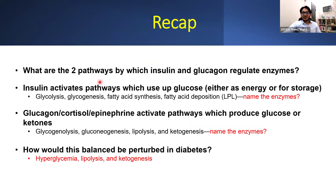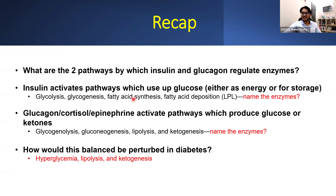So just to recap: what are the two pathways by which insulin and glucagon regulate enzymes? Both of them can act by gene expression. Insulin acts by dephosphorylation; glucagon acts by phosphorylation. Insulin activates pathways which use up glucose — either for energy or for storage. So insulin will activate glycolysis, synthesis of glycogen or glycogenesis, and fatty acid synthesis. Glycolysis is regulated via PFK2 and glucokinase. Glycogenesis is via glycogen synthase. Fatty acid synthesis is via acetyl-CoA carboxylase and fatty acid synthase.